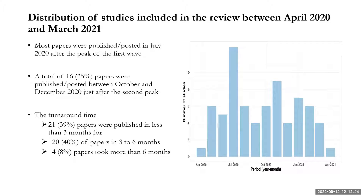Looking at the temporal distribution of papers, most papers were published or posted in July 2020, after the peak of the first wave, and a total of 16 papers were published between October and December, just after the second peak. Thirty-nine percent of the papers were published in less than three months from when the first case was reported in Africa, 40% were published within three to six months, and 8% were published after more than six months. A good number of papers were rapidly published to give some insight on what was happening within the continent.